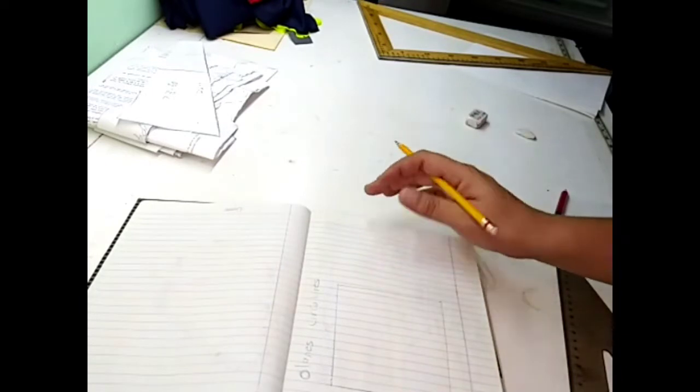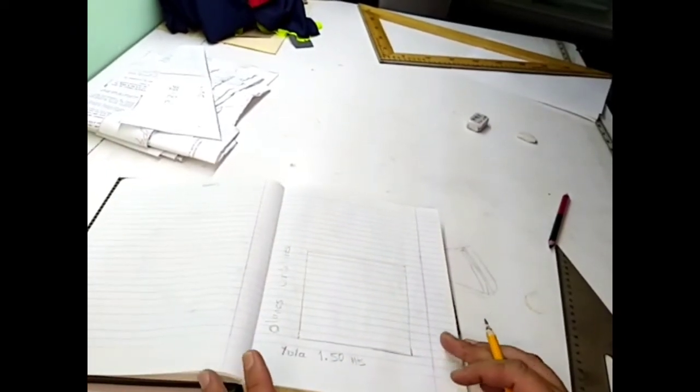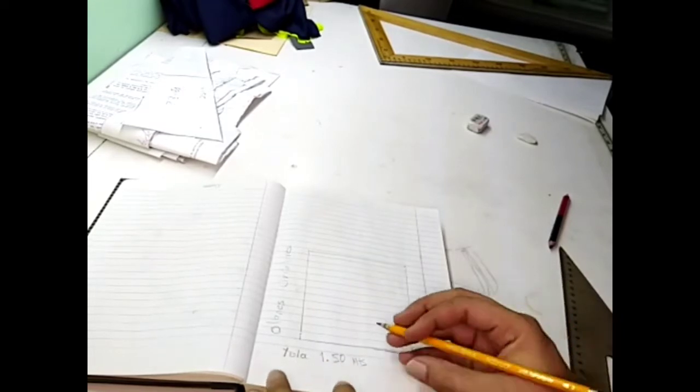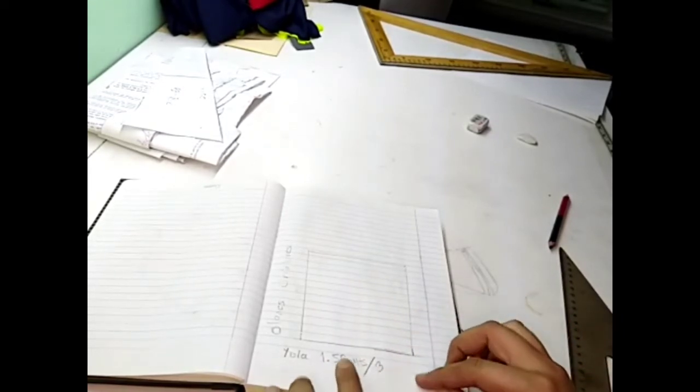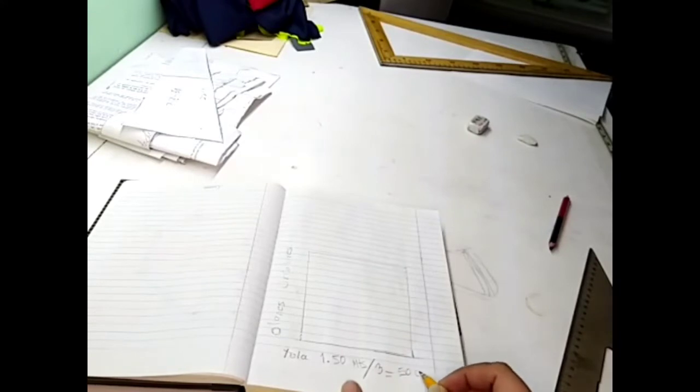Tenemos dos formas de hacer el trazo o el molde. La primera sería la siguiente. Por ejemplo, vamos a analizar que la tela contiene 1.50 de ancho. La forma más óptima para que yo ahorre tela sería, este 1.50 lo vamos a dividir entre tres partes. Es decir, que cada cuadro va a ser de 50 centímetros.